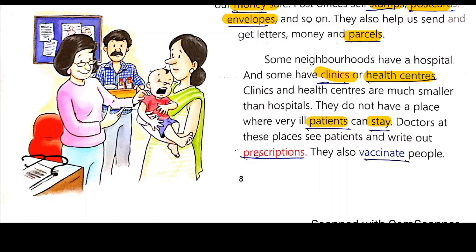Doctors at clinics see patients and write out prescriptions. In a clinic, doctors check up patients and they prescribe prescriptions. There is no facility for patients to stay. They also prescribe medicines to the patient, and the patient can buy the medicines from the local shops.